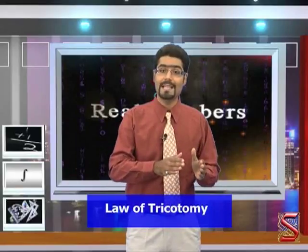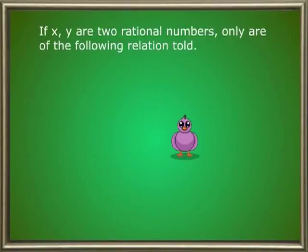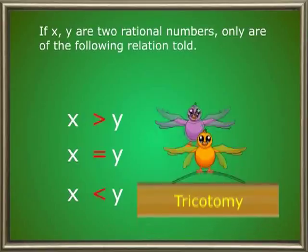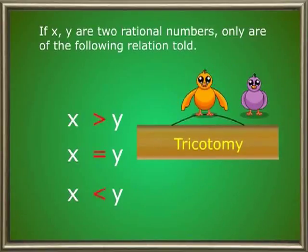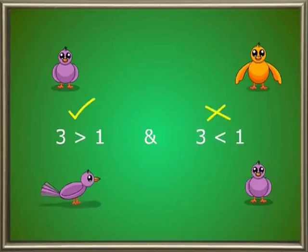In the case of rational numbers, one rational number cannot be both less than and greater than another rational number at the same time — only one of the possibilities will exist. This law is known as the law of trichotomy. See this example: are both statements true — 3 is greater than 1, and 3 is less than 1? We can see that 3 is greater than 1, but 3 is definitely not less than 1. So only one statement is valid at a time, not both.